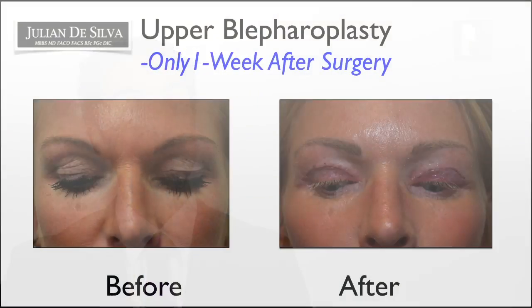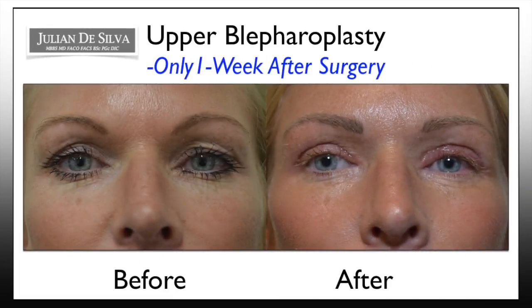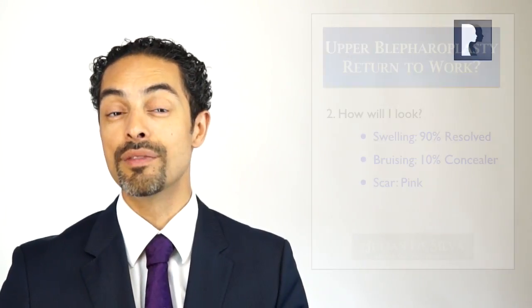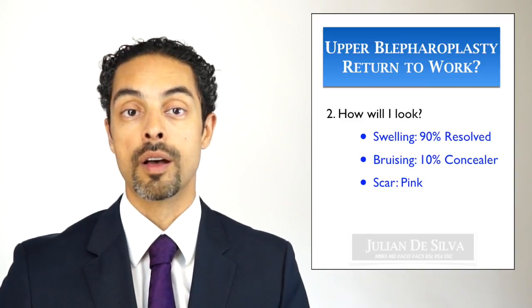After one week, any bruising can be covered with concealer. In terms of scarring, the scar will be a little pink and lumpy-bumpy, which is normal after upper blepharoplasty. However, depending on the technique, the scar can be largely hidden in the natural crease of the eyelid, making it very difficult to see even a week after surgery. Although rarely scars can be more noticeable, if meticulous care is taken with the surgical technique, the scars are generally discreet and difficult to see even one week after surgery.